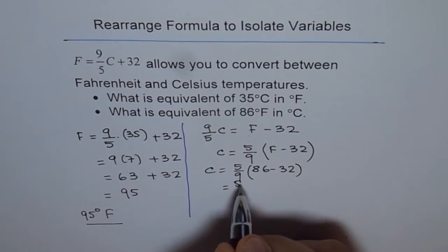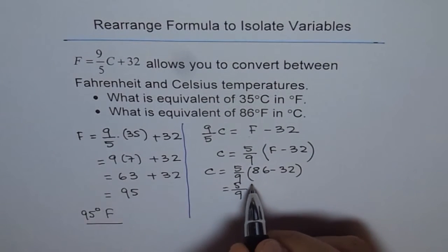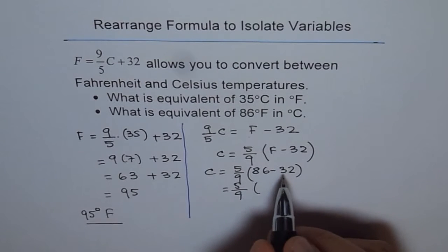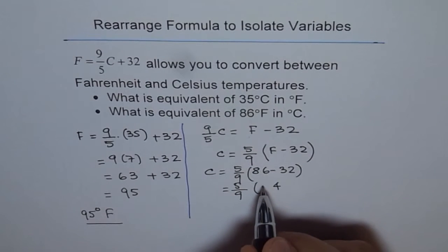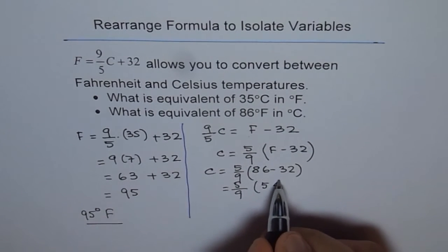And then we get 5 over 9. And what is 86 minus 32? 6 take away 2 is 4. And 8 take away 3 is 5. So we get 54.